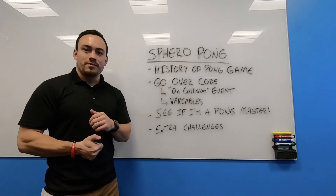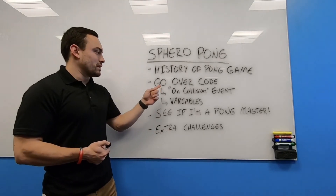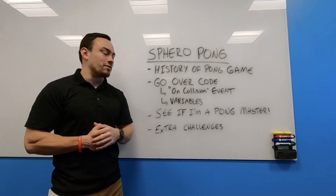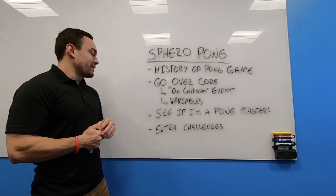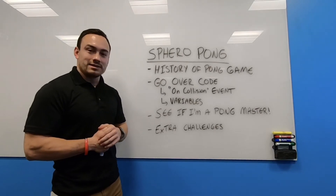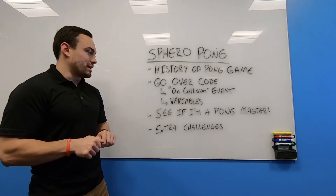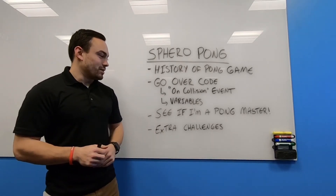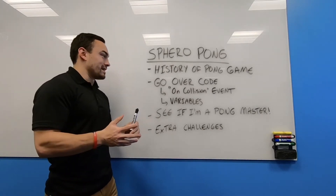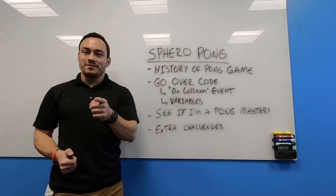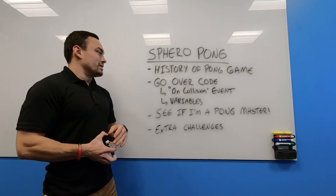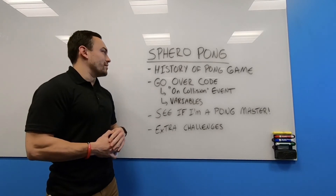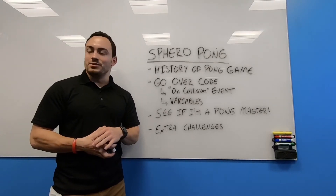Then we're going to go over the code for the Pong game. Specifically, we're going to introduce an on collision event, and we're also going to introduce variables, which we haven't done before. So that's going to be really cool. And then we're going to test it out, see if I'm a Pong master, see how good I am at this game by myself. And then we are going to go over some extra challenges.